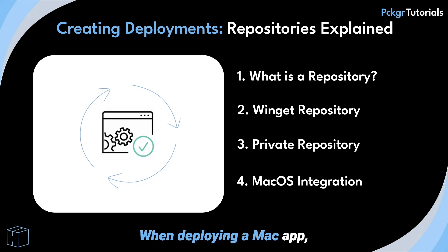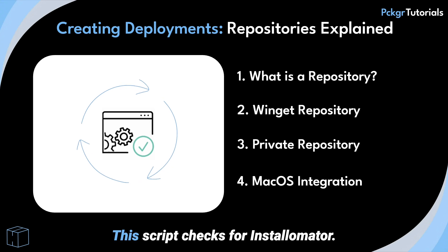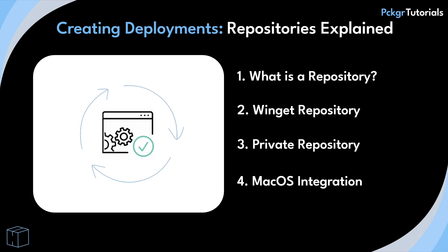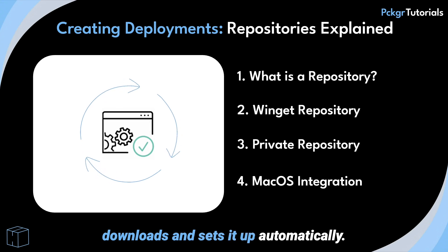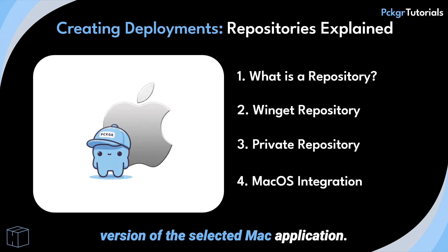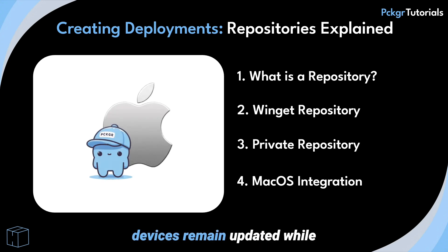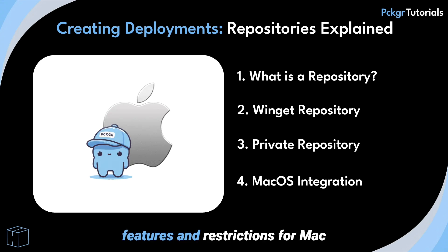When deploying a Mac app, Packager generates a shell script that runs in Microsoft Intune. This script checks for Installomator. If Installomator isn't installed, it downloads and sets it up automatically. The script then installs the latest version of the selected Mac application. This process ensures that Mac devices remain updated while maintaining simplicity and automation in deployments.